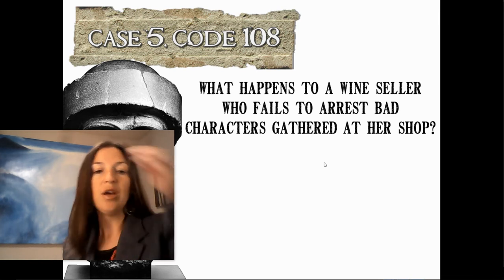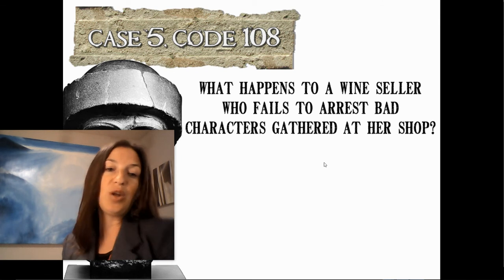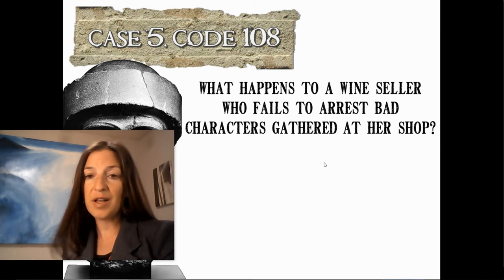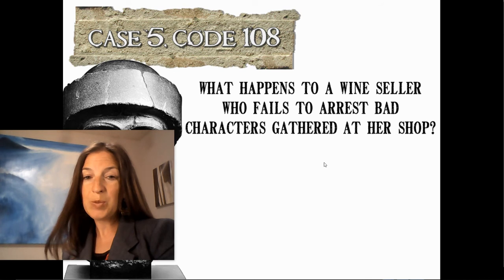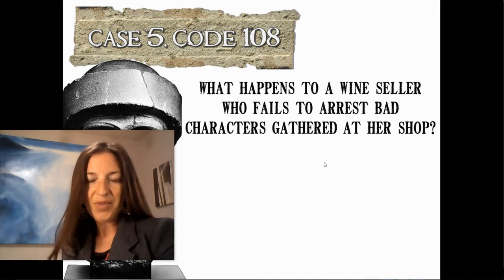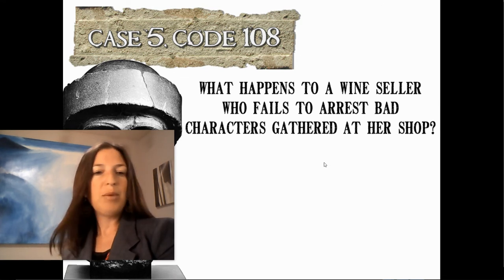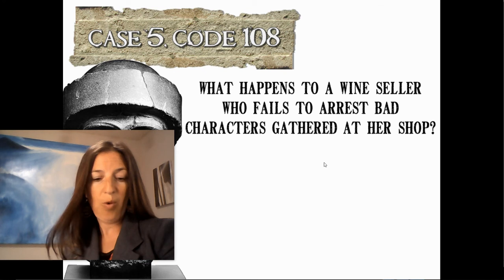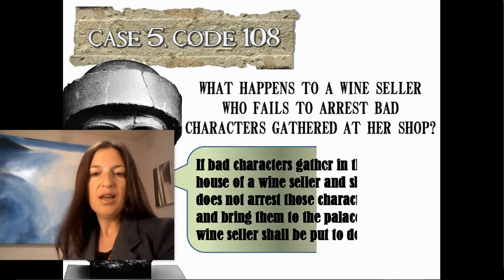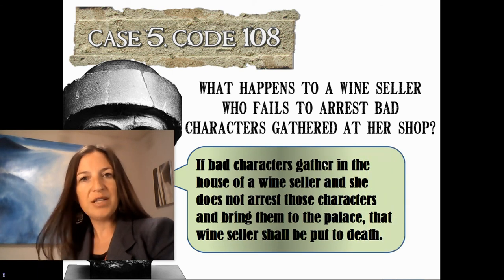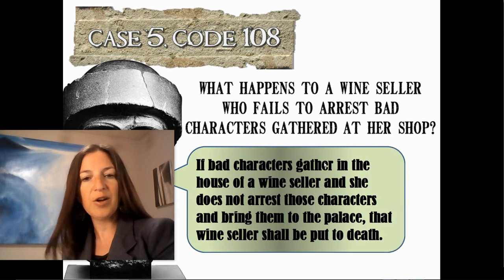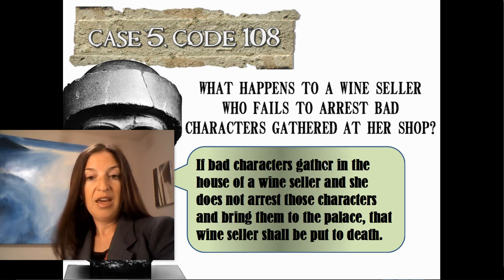Selling alcohol could make someone's conduct even worse — today we think about reckless driving and things like that. In those days, apparently there were ways to be dangerous under the influence as well. If bad characters are gathered in the house of a wine seller — maybe already inebriated, or just known for a bad reputation — and she sells them wine anyway, here is the result: if bad characters gather in the house of a wine seller and she does not arrest those characters and bring them to the palace, that wine seller shall be put to death.